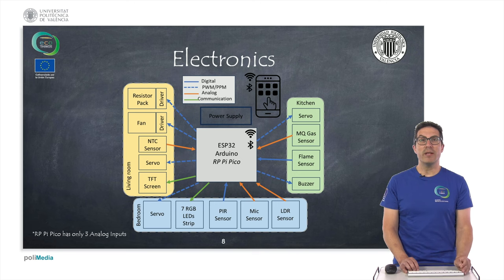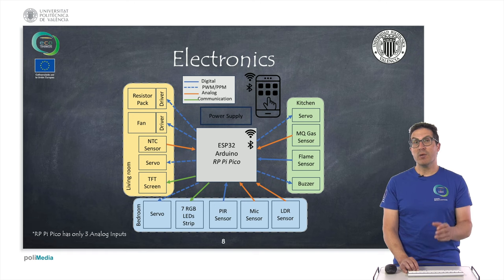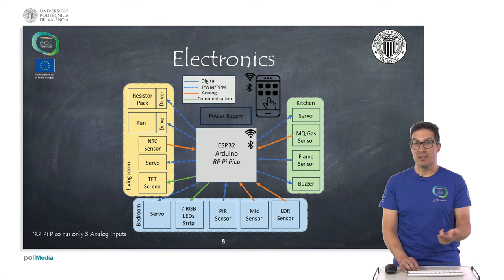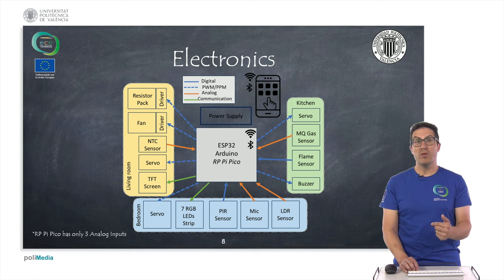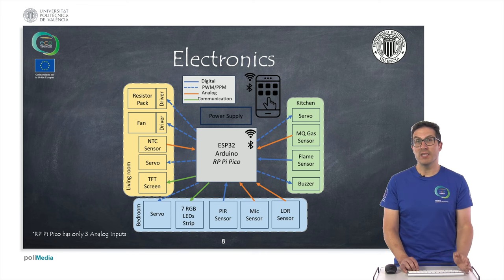A small note about using the Raspberry Pi Pico: it only has three analog inputs, and we are proposing to use four analog sensors. However, the gas sensor and the microphone both have a potentiometer and also include a digital signal. So if you are using the Raspberry Pi Pico, we suggest using the digital signal instead of the analog signal for those sensors.